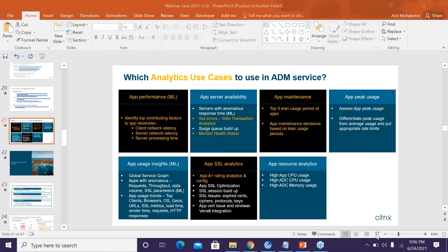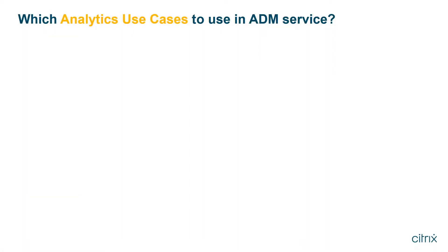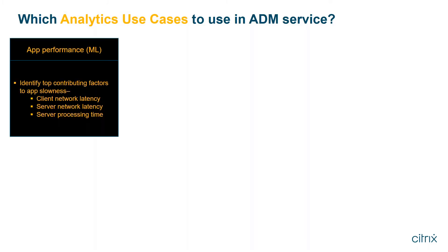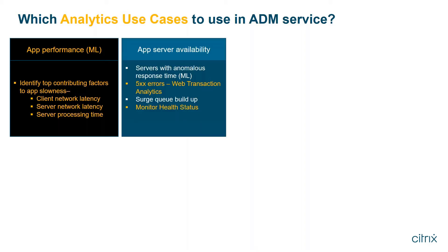Let's move on to the second part of the webinar and understand which analytics use cases you can use in ADM Service. We have app performance analytics to help you identify slower apps in your enterprise. If you're managing several different applications, it will help you pinpoint which application's response time is becoming anomalous and identify the contributing factor. Under the hood, it uses a machine learning model with pattern recognition to understand baseline behavior and highlight anomalies.